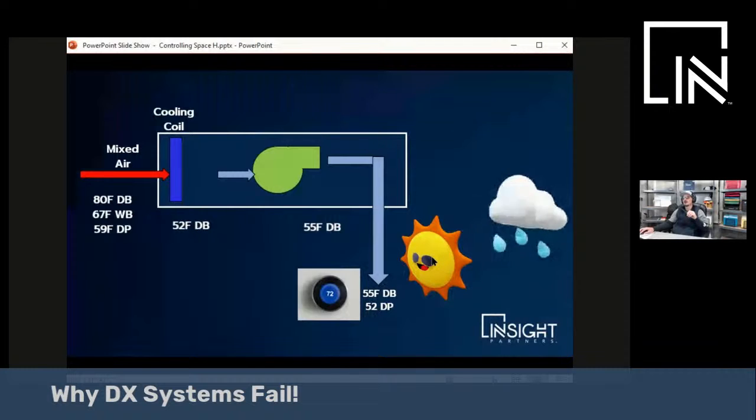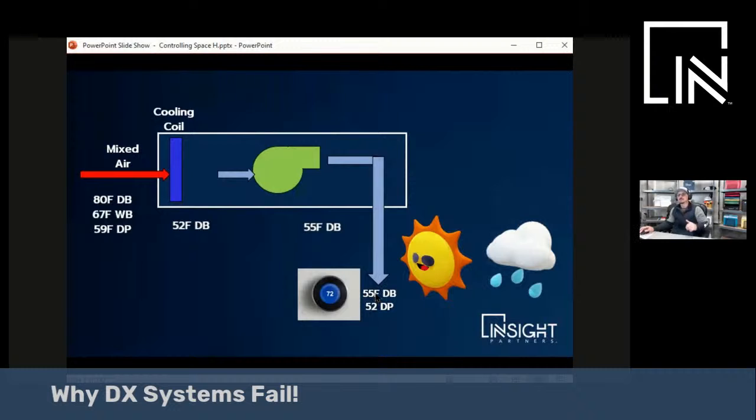What happens is, on a part-load day, it's October, November, it's cool and rainy, it might be 65, 70 degrees. This 55-degree air will make it very cold in the space. So what happens is the system will cycle back the cooling. It'll either turn off the compressors, or it'll turn down the compressors and elevate this leaving air temperature.